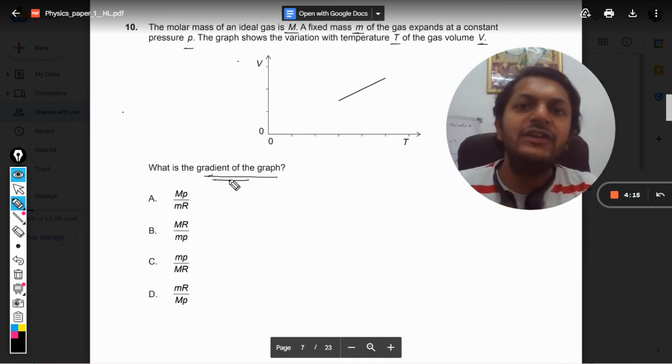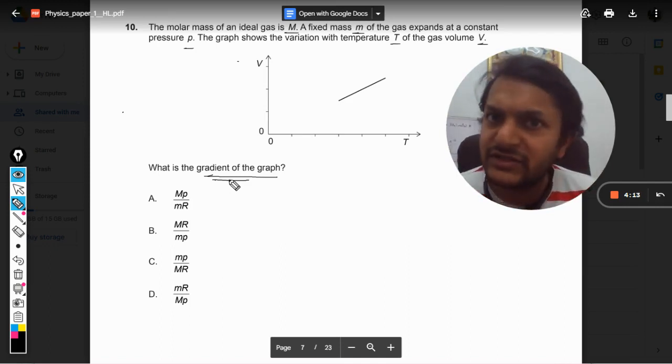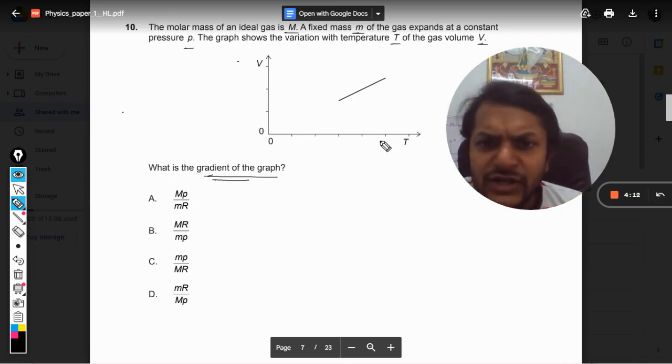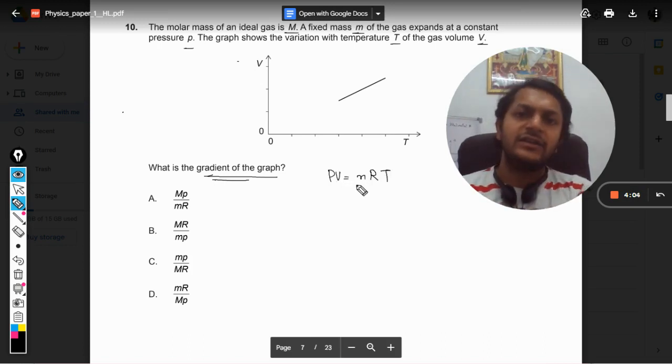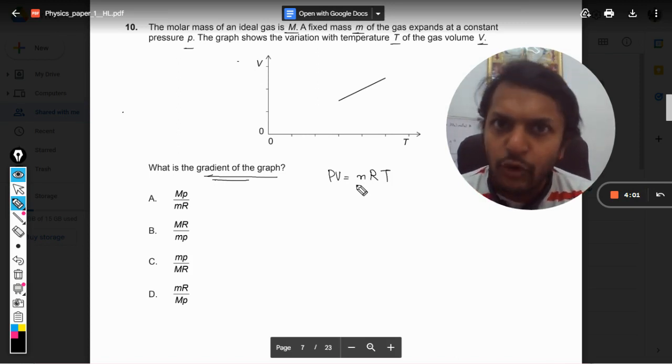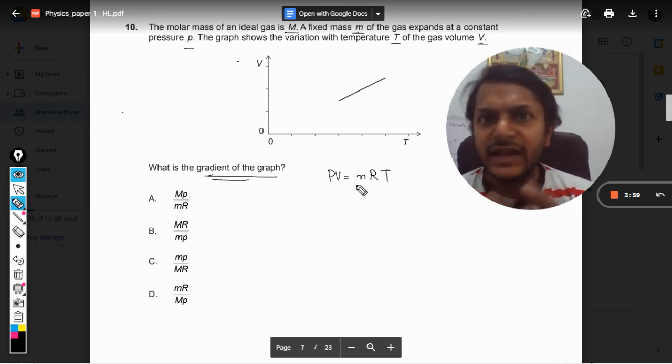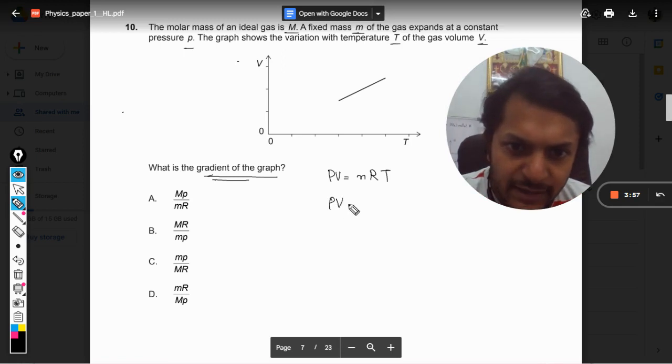In this equation, because we are using ideal gas, the ideal gas equation will always be there: PV equals nRT, where n is number of moles and R is universal gas constant.